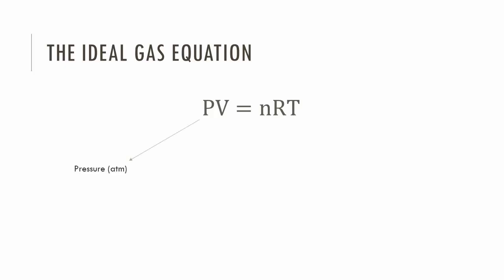In this formula, P is equal to the pressure, V is the volume in liters, n is the number of moles, R is the ideal gas constant, and T is the temperature in kelvins.